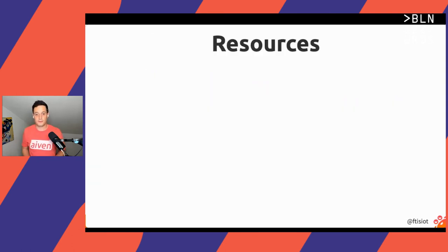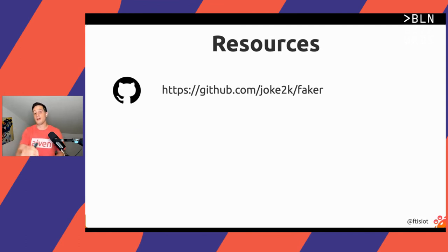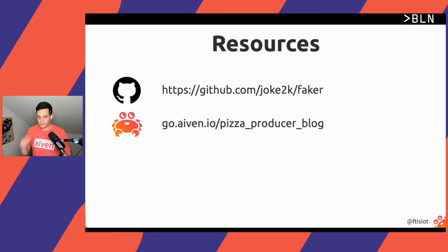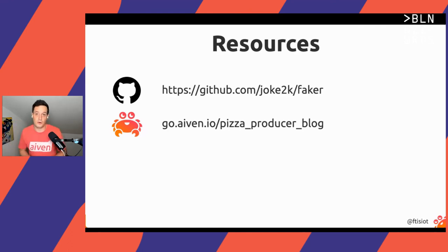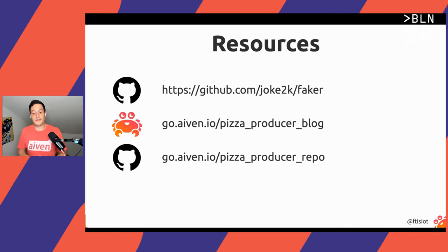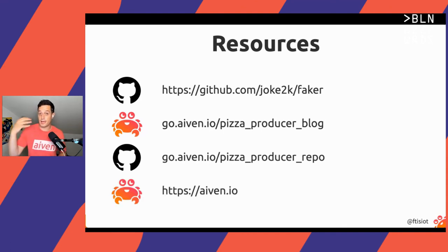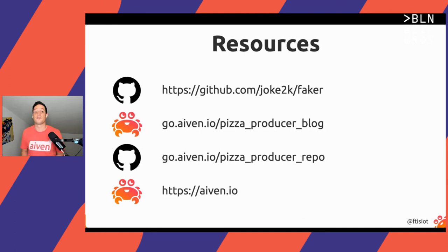Some resources to finish off. First, the Faker documentation — it's amazing, go check it out, it's worth your time. Second, if you want to understand how to create a fake producer for Kafka using Faker, I've written a blog post about that at my website. If you prefer running code, there is a public GitHub repository that gives you a fake pizza order producer pointing to your Kafka environment in minutes. And if you want to try Kafka but don't have Kafka, my company offers it as a managed service.